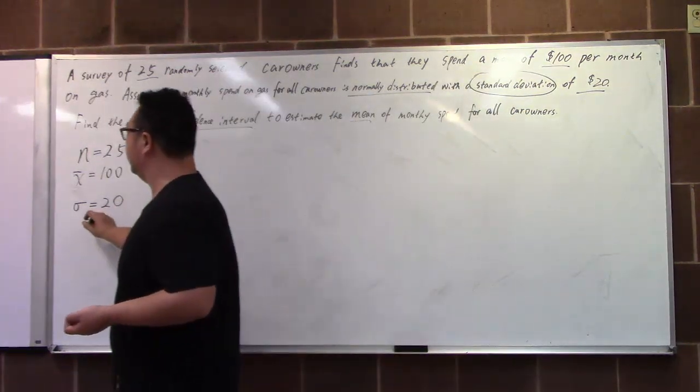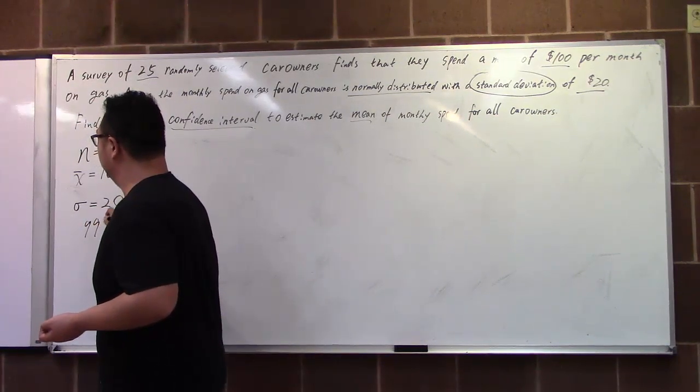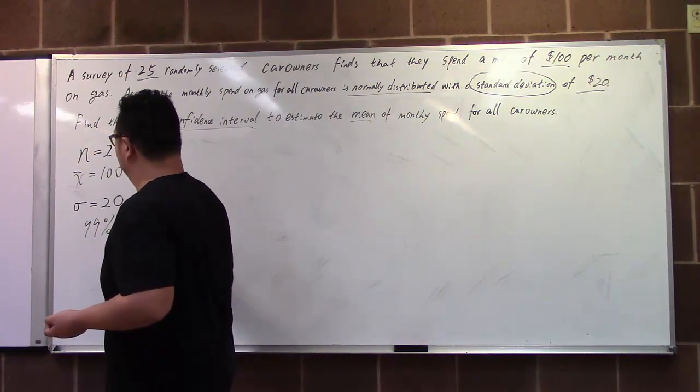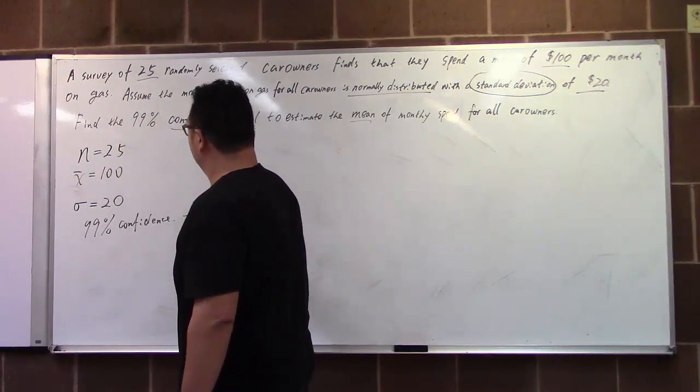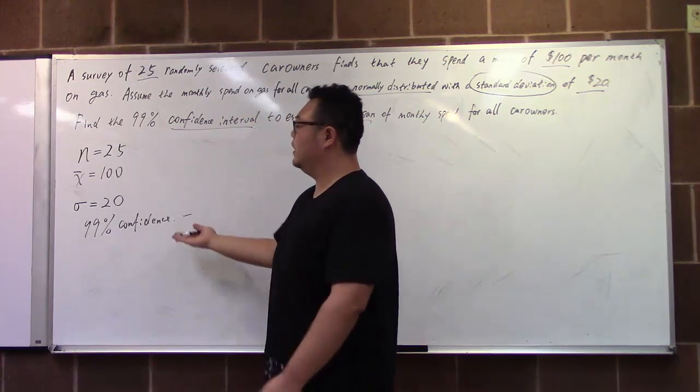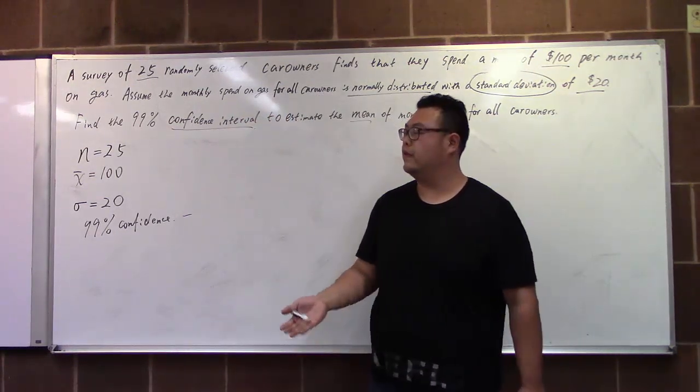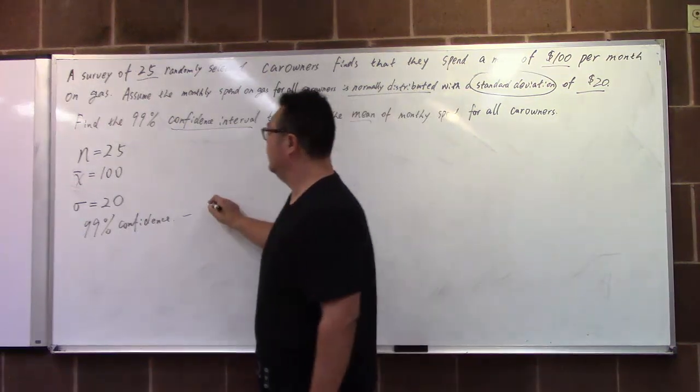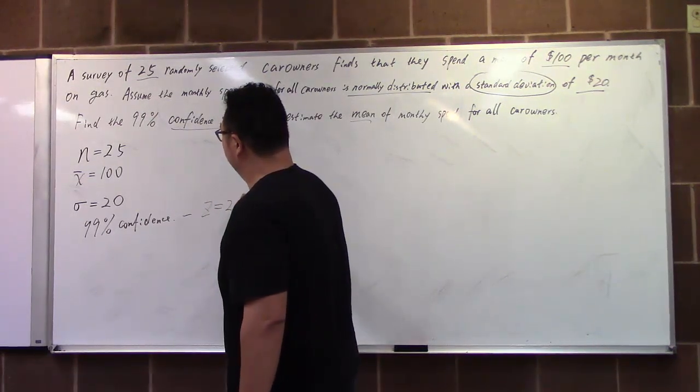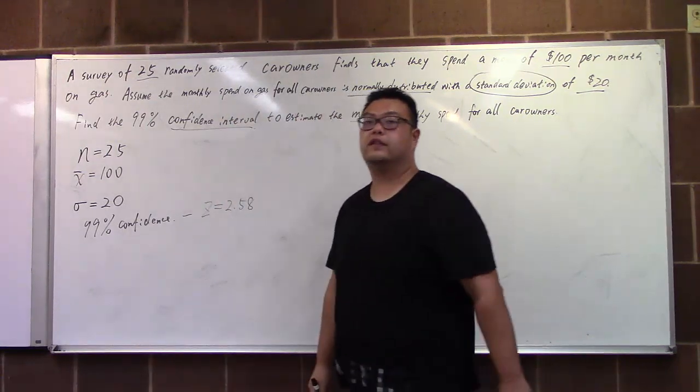And we have 99% confidence. From 99% confidence, just follow the procedure to change to the Z score in this case. We're going to use 2.58 for the Z score.